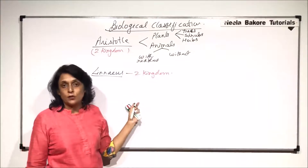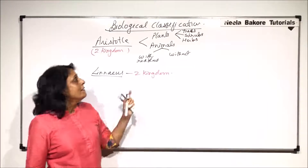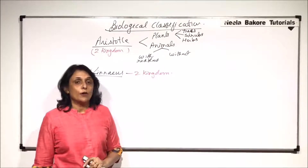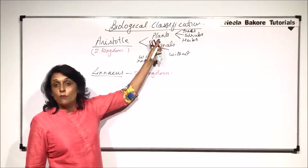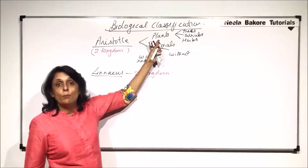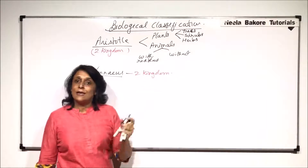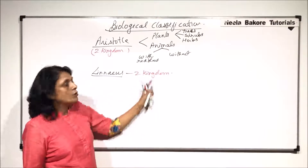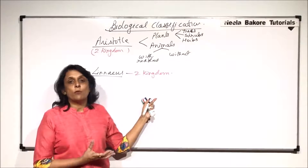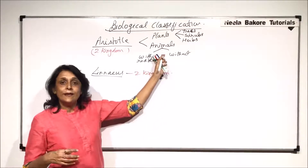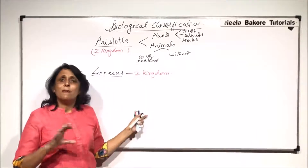These two kingdom classifications could not explain many important things. For example, where should we place Euglena-kind of organisms? Euglena has some plant-like characters — it can perform photosynthesis because it has chloroplasts. But it is without a cell wall, and absence of a cell wall is an animal character. They were also not able to place fungi-type organisms. Fungi are saprophytes — they take nourishment from decomposing organic matter.